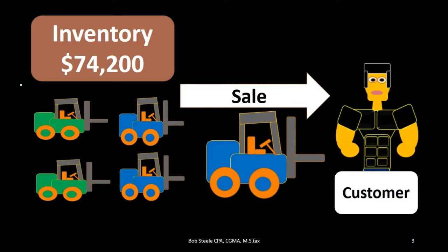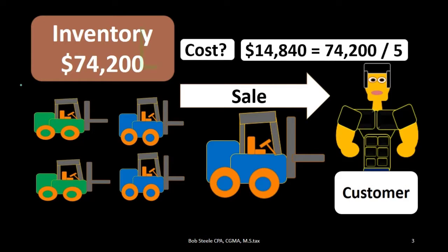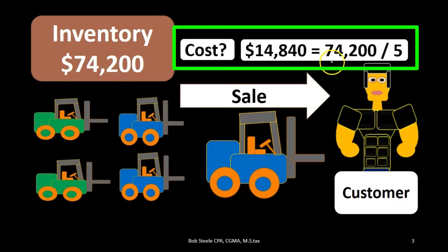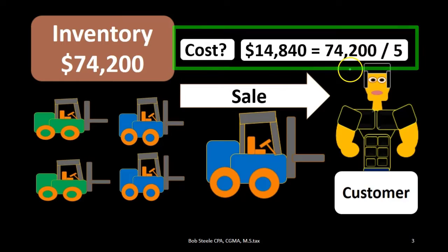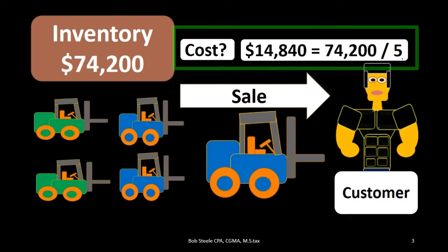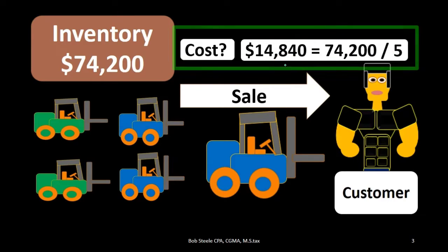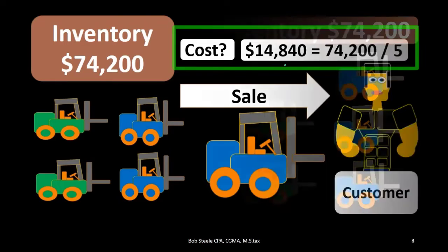You might say, let's take the total forklifts and divide the total cost by the number of forklifts. So if there's $74,200 total costs on the balance sheet and we had five of them before the sale, we divide it out — maybe we say it's $14,840. But that's just an average because all five of them may not have cost the same amount.